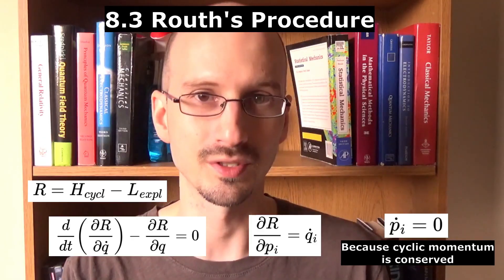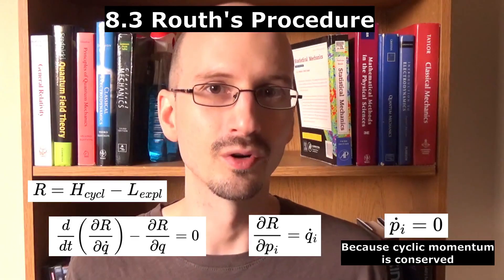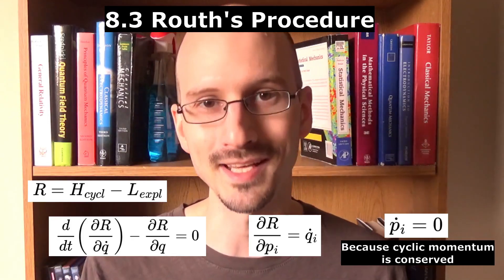The Lagrangian equations hit all of the explicit coordinates, whereas the Hamiltonian equations hit all of the cyclic coordinates.